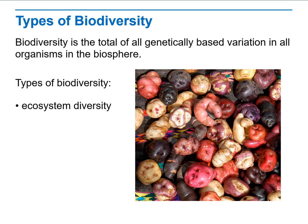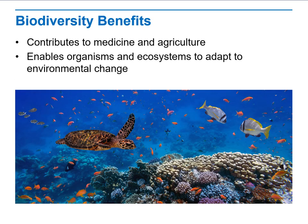First, ecosystem diversity — meaning how the ecosystem can cause these differences. Second, species diversity, which is the differences between individuals within the same species. And third, genetic diversity, which means the differences in their genetic information, which is the DNA, and how they are different and how they affect genetic variation.